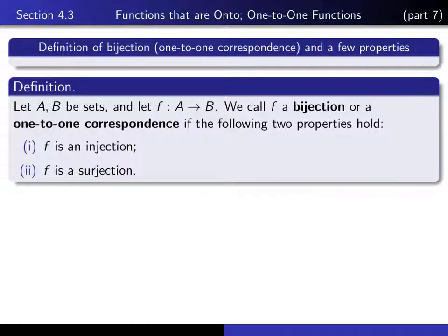Here's the working definition of bijection. If we have a function f from set A to set B, then we refer to it as a bijection — also referred to as a one-to-one correspondence — if it is both an injection and a surjection.